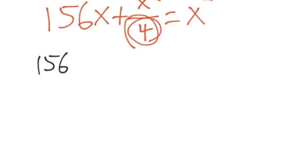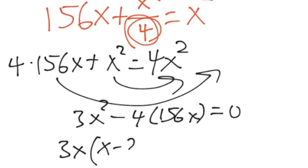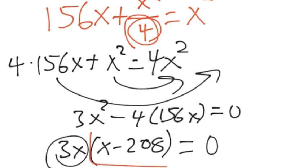So now our equation is 156X times 4 plus X squared equals 4X squared. So then we have, if we subtract everything on this side, we'll have 3X squared minus 4 times 156X equals 0. And then if we pull out the 3X, we'll have X minus 208. And that equals 0. Now the only way for this to equal 0 is if either this part equals 0 or this part equals 0. And for X minus 208 to equal 0, then X has to be 208. And for this problem, only 208 makes sense. So our answer is that the length of the long side is 208.